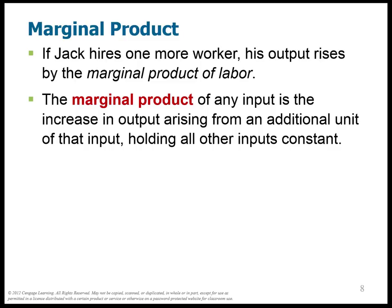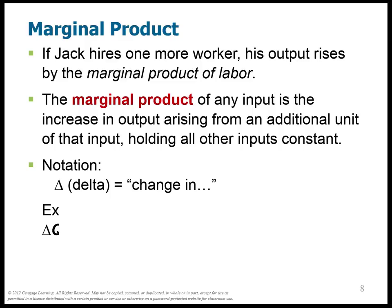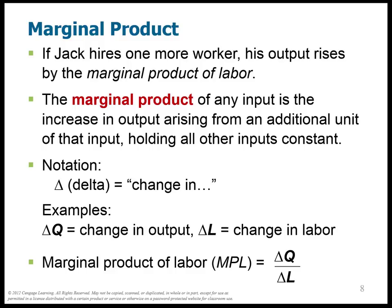We introduce delta — this uppercase Greek letter — and it means 'a change in.' So we have a change in output divided by a change in labor, and that's the marginal product of labor. Generally, we make the change in labor equal to 1. So if I hire one additional person, what additional output do I have? That's the question I'm asking.